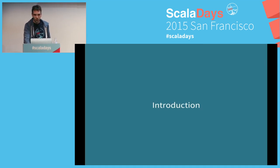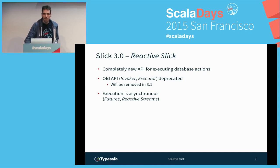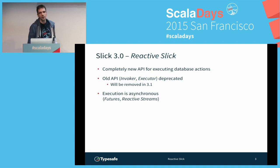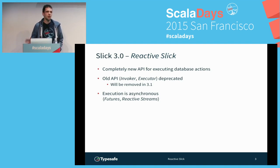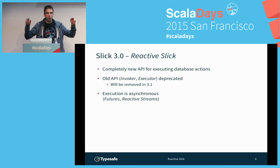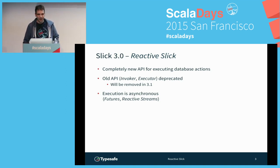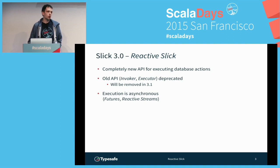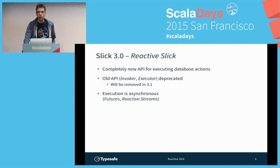What problem are we actually trying to solve here? We're giving you a completely new API for executing database actions. An action is anything that previously took a session parameter — anything that actually hits the database, like creating a schema, running a query, or inserting data. The old API based on invoker and executor classes will completely go away. The new API is totally asynchronous, giving you futures or reactive streams, making it a perfect fit for Akka or Play applications so you don't have to worry about threading or blocking.